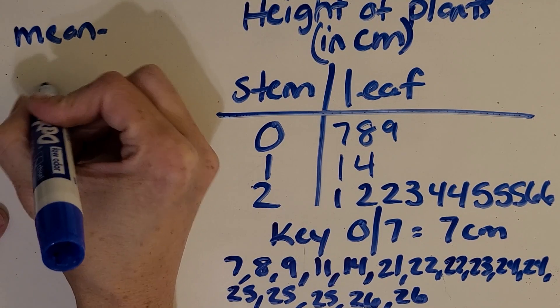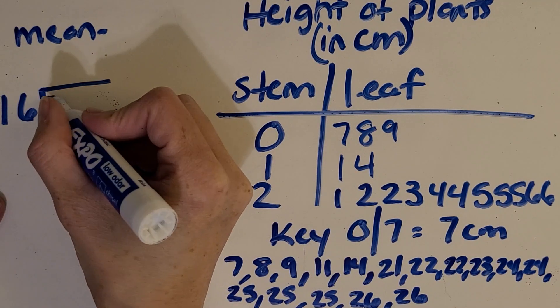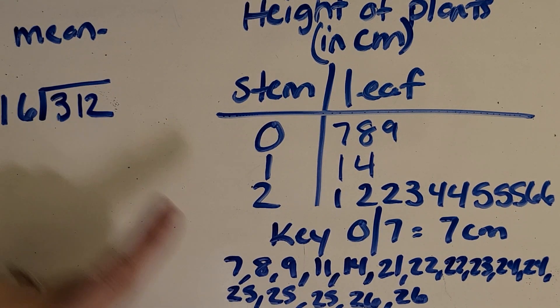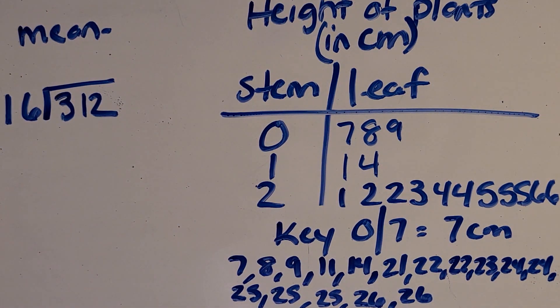So whatever you end up getting as the total of all of all of these numbers, we're going to be dividing by 16. So why don't you go ahead and pause the video, count all of that up, and let's see if we get the same thing. All right, so hopefully we got the same thing as the total for all of the heights combined. And now let's check your work on division by just following along with me. Let's see if we got the same thing.